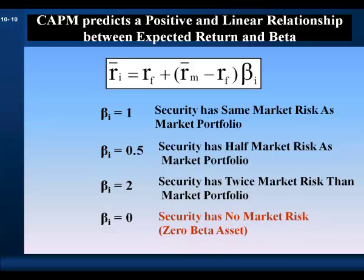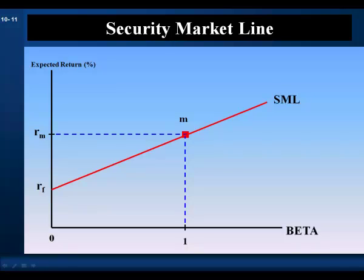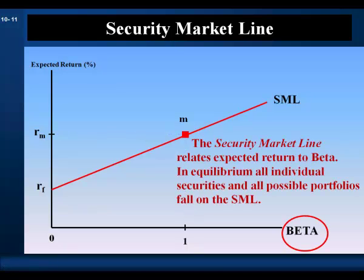The equation of the capital asset pricing model is the equation of a straight line, with the risk-free rate as the intercept. This line is called the security market line. The capital market line relates expected return to standard deviation — total risk — whereas the security market line relates expected return to beta, where beta is a measure of systematic market risk, the risk that is priced by the market.